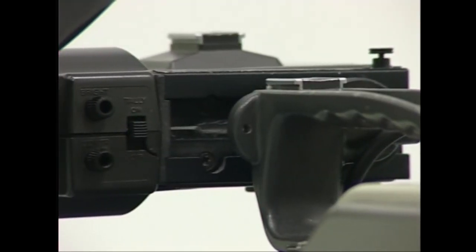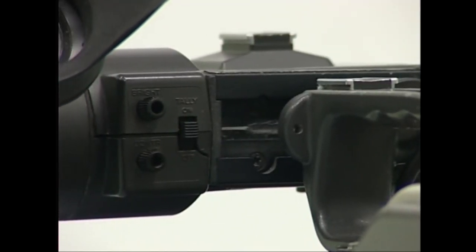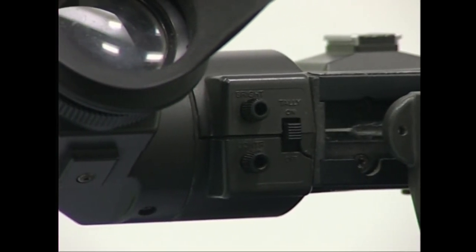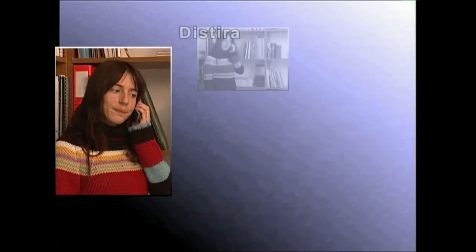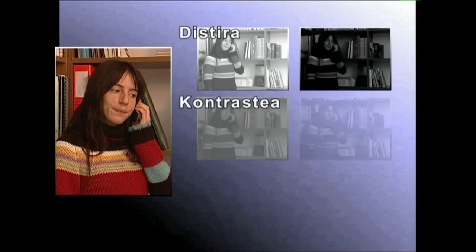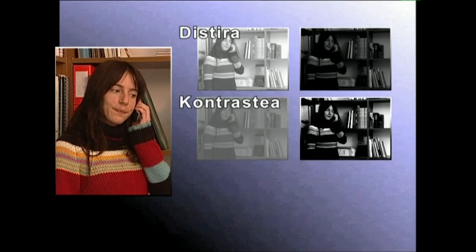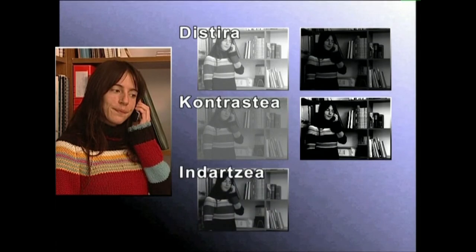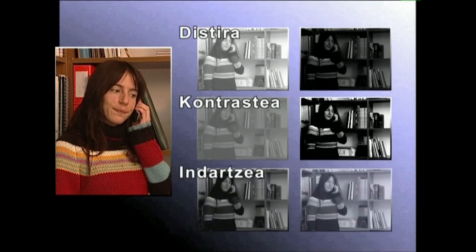Ikusgailuak gainera hiru gauza garantzitsu kontrolatzeko aukera eskaintzen du: distira ikusgailuko irudiaren distira egokitzeko; kontrastea ikusgailuko irudiaren tonuarteko kontrastea indartzeko edo arintzeko; eta indartzea ikusgailuko irudiaren nabardurak areagotzeko, fokatze lana errazteko.